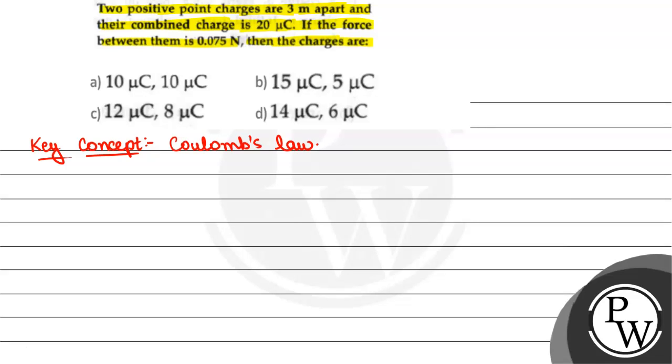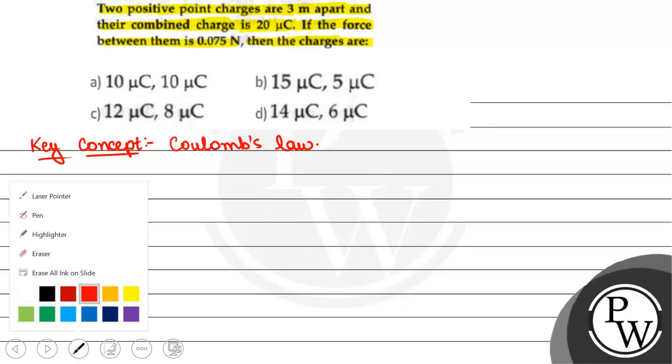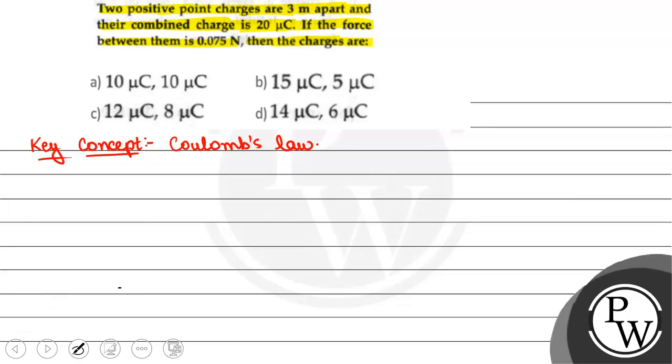According to Coulomb's law, force between two charges Q1 and Q2 kept at a distance R, F is equal to K Q1 Q2 by R square, where K is equal to 9 into 10 to power 9 Newton meter square per Coulomb square.